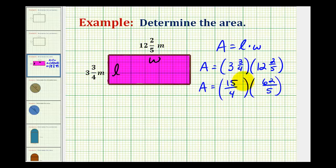And before we multiply, we should try to simplify. Since 15 and 5 have a common factor of 5, I'll rewrite 15 as 3×5. And since 4 and 62 have a common factor of 2, I'll rewrite 4 as 2×2. I'll rewrite 62 as 2×31. And this makes it very easy to identify the common factors. 5 over 5 simplifies to 1.